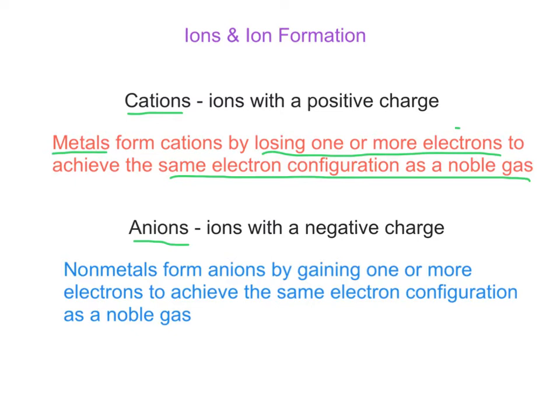Anions, on the other hand, come from nonmetals, and they gain one or more electrons, so they become just like a noble gas.